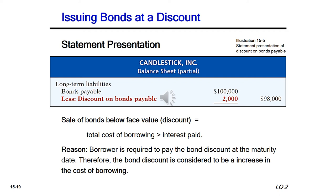The new discount on bonds payable account is a long-term liability contra account, so it appears on the balance sheet in the long-term liabilities section as a deduction from bonds payable. We show bonds payable at $100,000 and then deduct discount on bonds payable of $2,000, giving a net carrying value. The sale of bonds below face value means the total cost of borrowing is greater than the interest paid, because the borrower must repay the full face value at maturity.